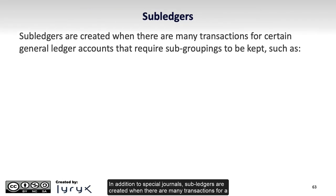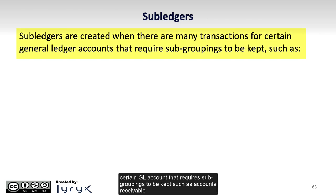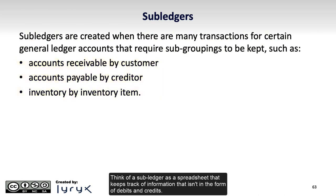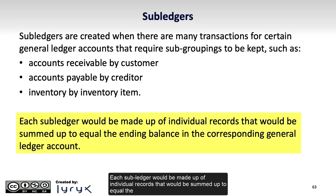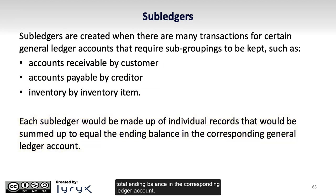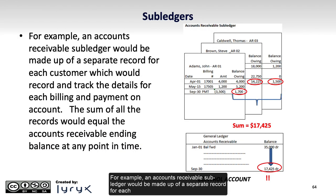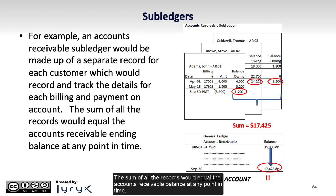In addition to special journals, sub-ledgers are created when there are many transactions for a certain GL account that require subgroupings to be kept, such as accounts receivable by customer, accounts payable by creditor, or inventory by item. Think of a sub-ledger as a spreadsheet that keeps track of information that isn't in the form of debits and credits. Each sub-ledger would be made up of individual records that would be summed up to equal the total ending balance in the corresponding ledger account. For example, an accounts receivable sub-ledger would be made up of a separate record for each customer, which would record and track the details for each billing and payment on account. The sum of all the records would equal the accounts receivable balance at any point in time.